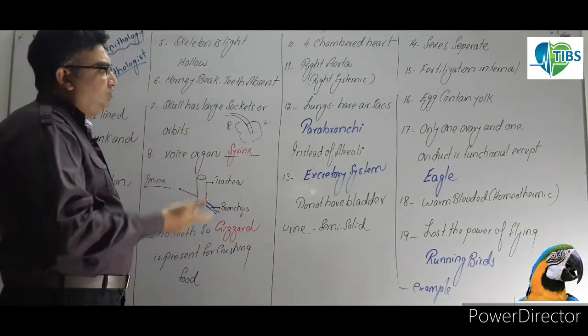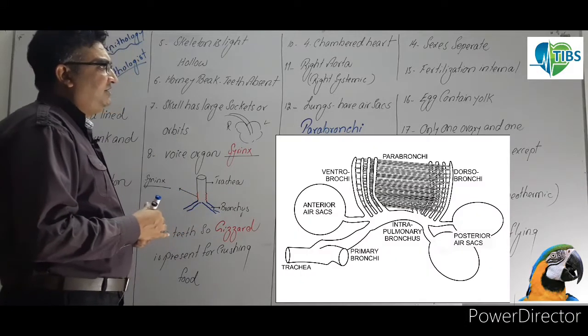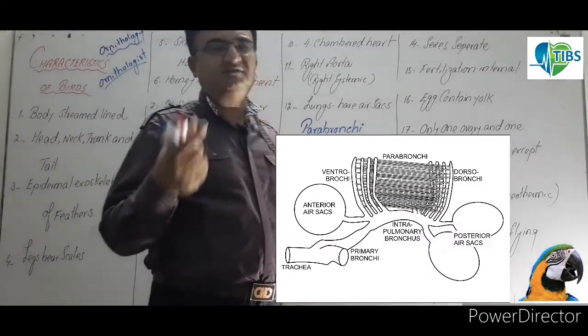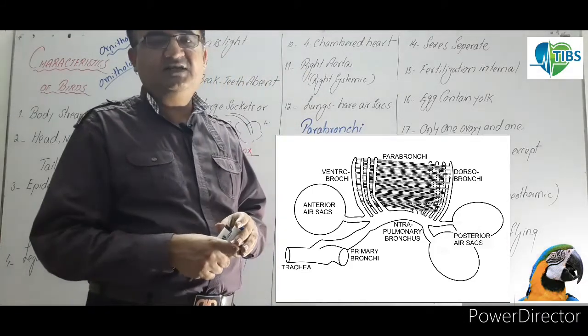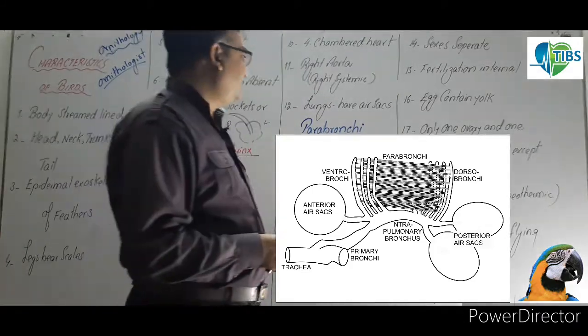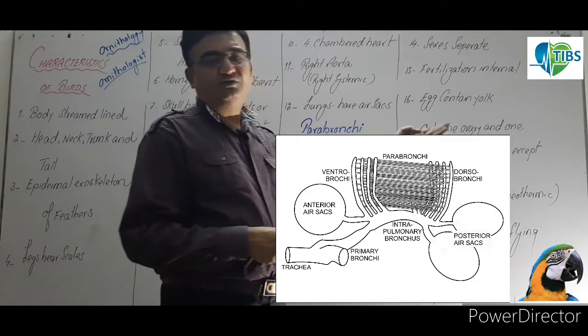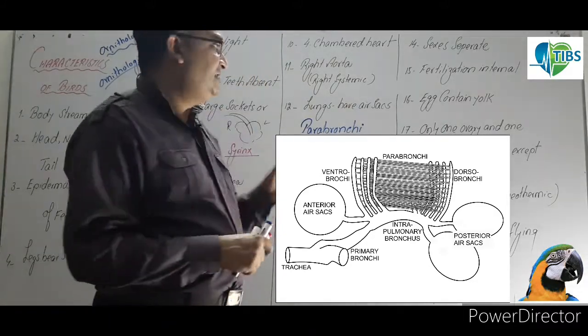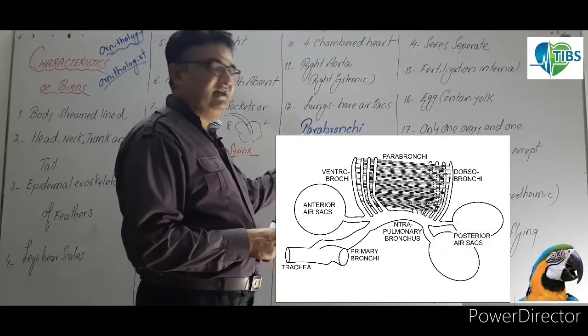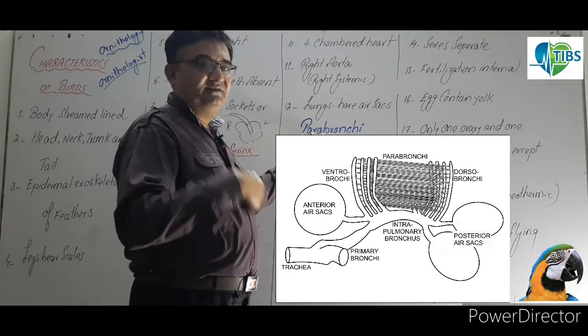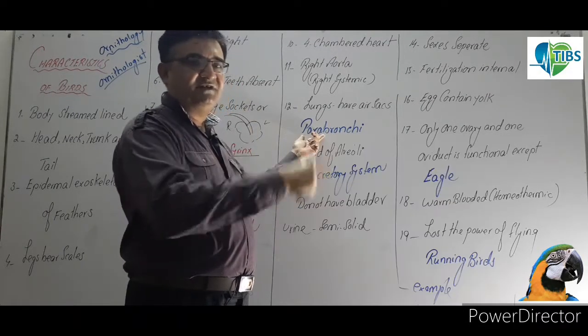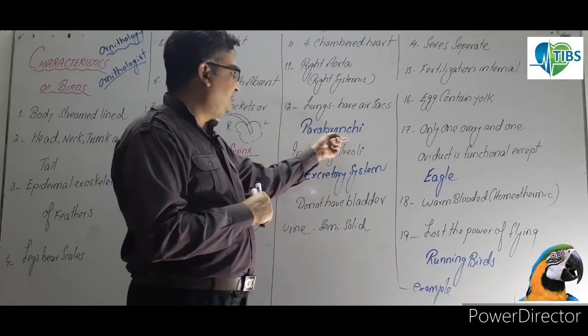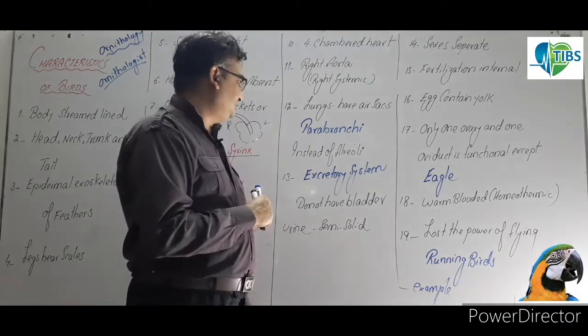Lungs are present for respiration. Inside the lungs there are air spaces to intake maximum oxygen. Instead of alveoli, they have parabronchi which are open on both sides. You've already studied this in the respiration chapter. Because of this, stale air never remains inside and they always breathe fresh air while expelling old air. Parabronchi can be an MCQ.